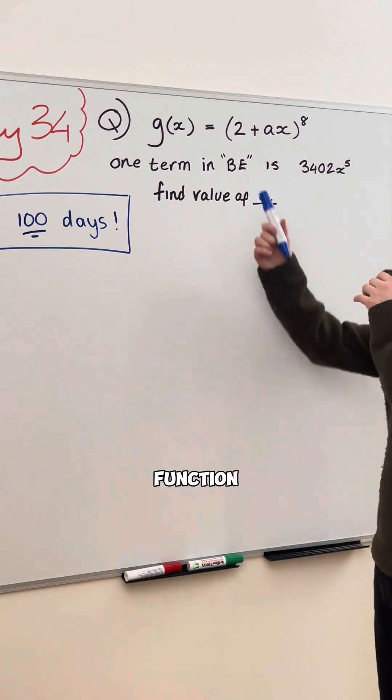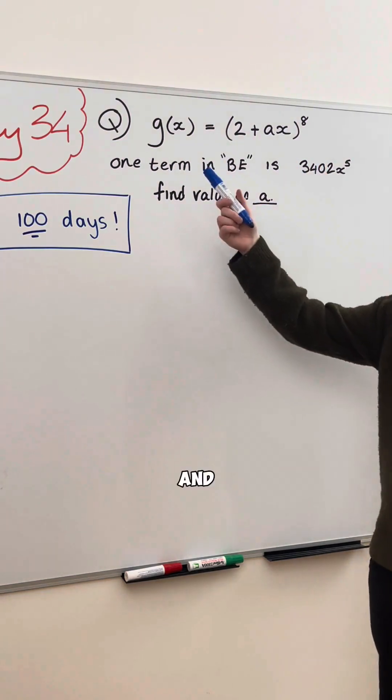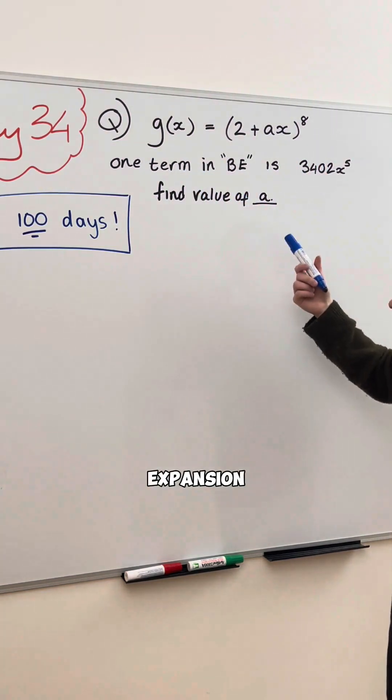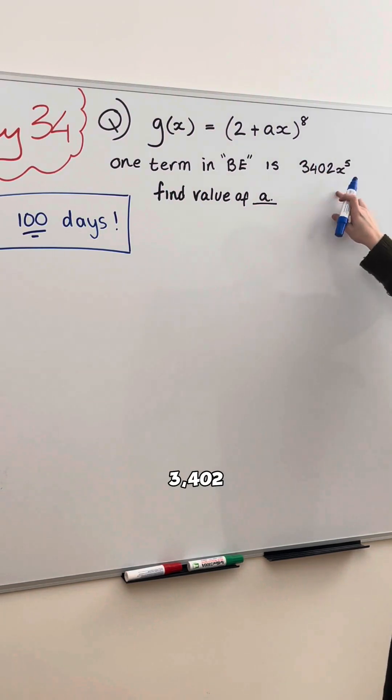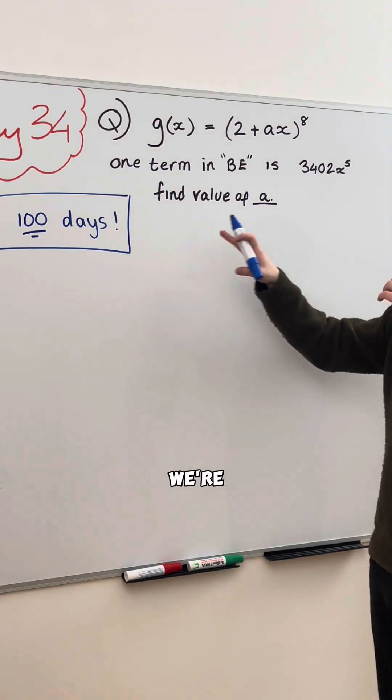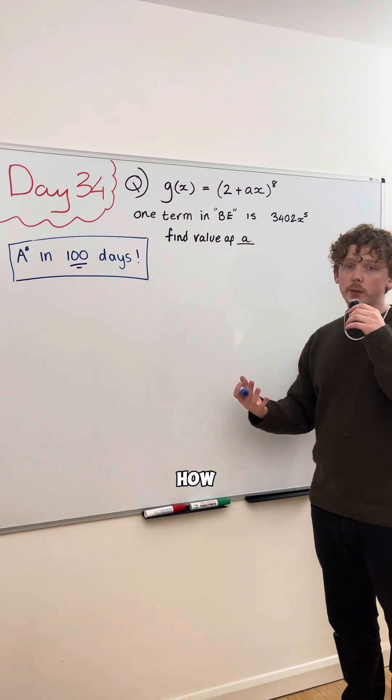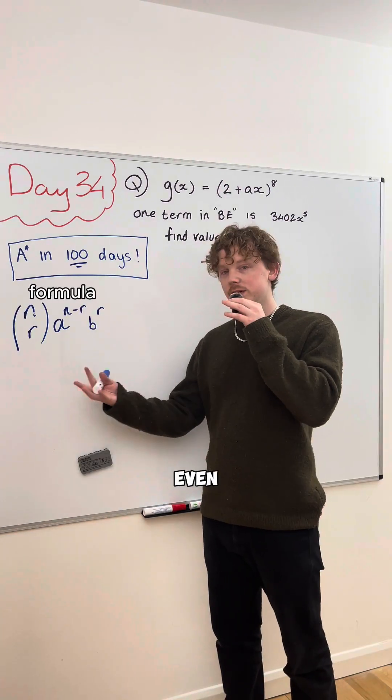Here, we're given a function, binomial, and we're told that one term in the binomial expansion is 3,402 x to the power of 5, and we're told to find the value of a. So how are we going to do this? What even is this?